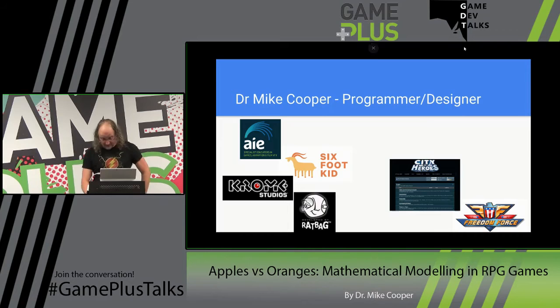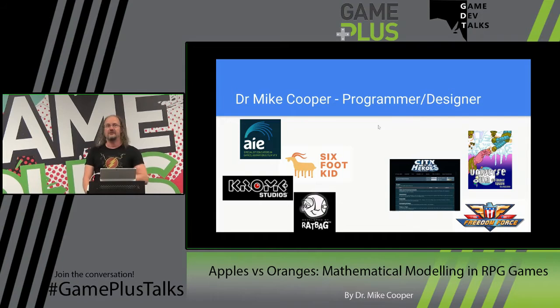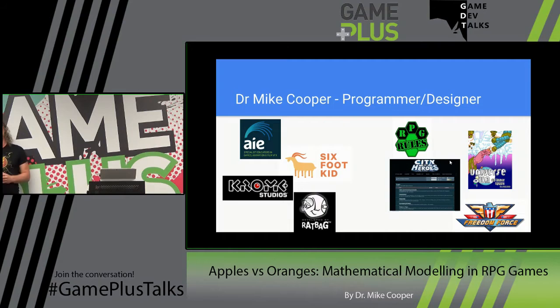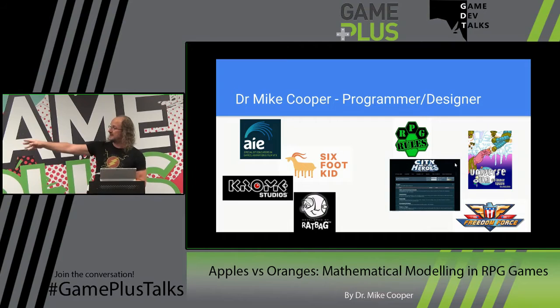When I was at Six Foot Kid, I decided I wanted to be a comic writer and artist and made Universe Gun, which I'm still doing, available in Greenlight Comics. And at AIE, I started putting together RPG rules in my spare time about a year ago — a role-playing game system in Unity to end all role-playing game systems. So this talk, you're getting the hobbyist enthusiast mainly.